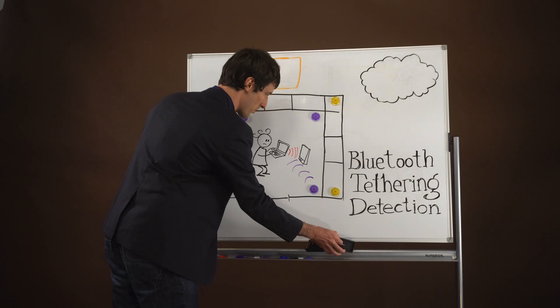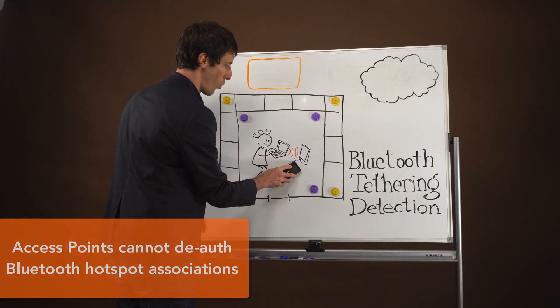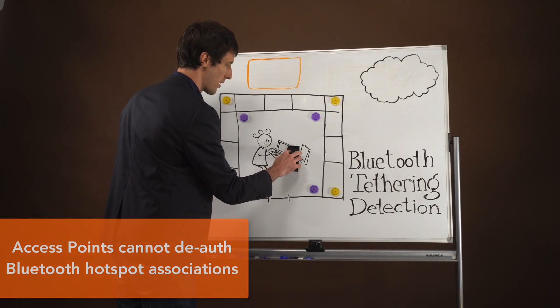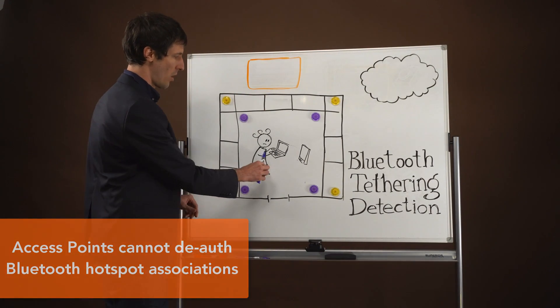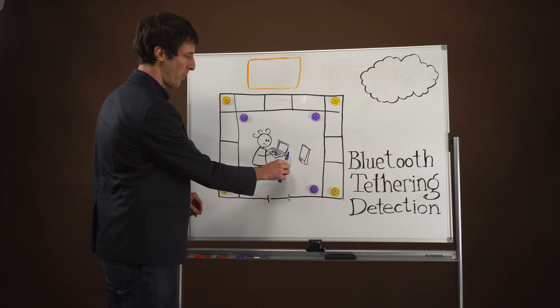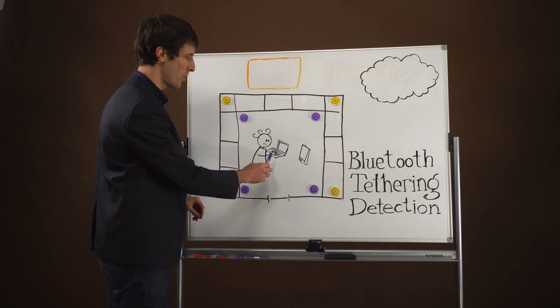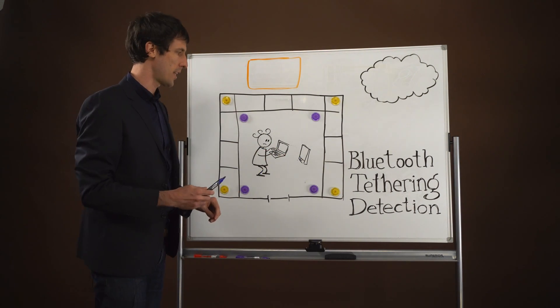Many modern smartphones, though, allow you to also connect to the internet through Bluetooth tethering. In this instance, the laptop and the phone will be paired via Bluetooth and then you would initiate the internet connection.